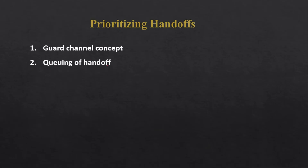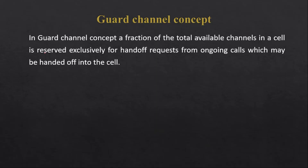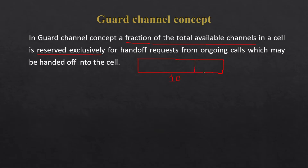The first method is the guard channel concept, and the second is queuing of handoff. In the guard channel concept, a fraction of the total available radio channels in a cell is reserved exclusively for handoff requests from ongoing calls which may be handed off into the cell. For example, out of 10 available channels, we reserve 3 channels for handoff and 7 channels for traffic such as calls or data.